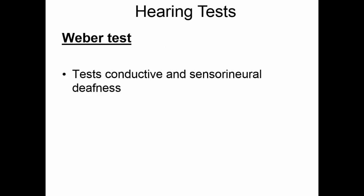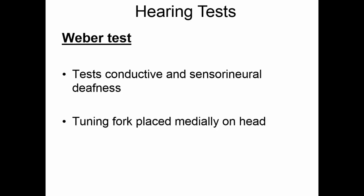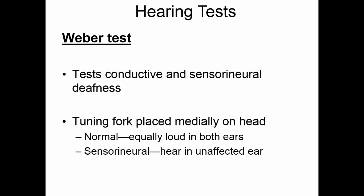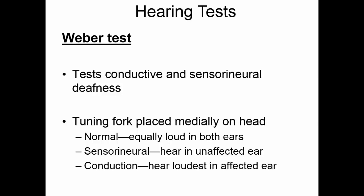The Weber test is one of the tests for hearing. It will test for both conductive and sensorineural deafness. You use a tuning fork, strike it to get it to vibrate, and then place the handle medially on your head. If you have normal hearing, you will hear the sound equally loud in both ears. If you have sensorineural deafness, you will hear the sound in the ear that does not have the nerve damage. If you have conduction deafness, you will hear the sound loudest in the ear that has the conduction problem.